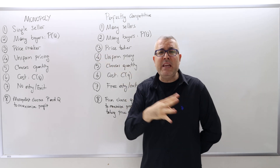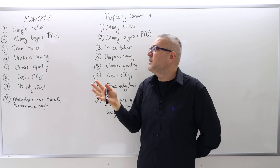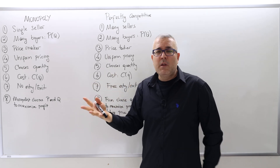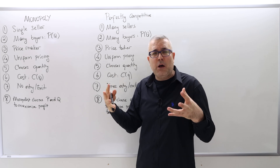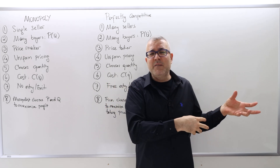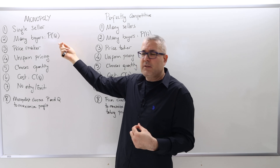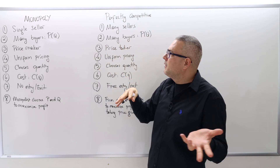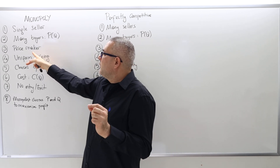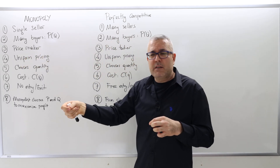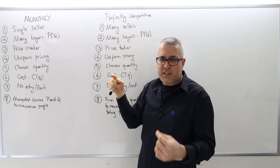The second assumption: there are many buyers in the market, which is the same for both monopoly and perfectly competitive markets. We don't really focus on the buyer side; we take buyer behavior as given, represented by the demand curve — the inverse demand curve P of Q. In both the competitive market and monopoly, there will be some demand curve, linear or not.